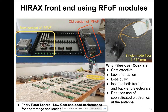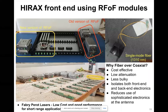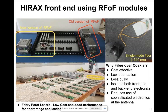The type of fiber we're using is a single-mode fiber operating at a wavelength of 1310 nanometers. The main reason we're using fiber rather than coax is that fiber is cheap, has low loss, is less bulky, and also isolates the front end from the back end in case of a catastrophic event like a lightning strike.